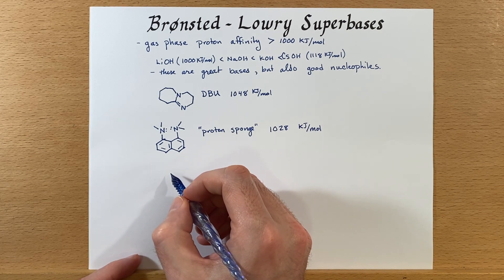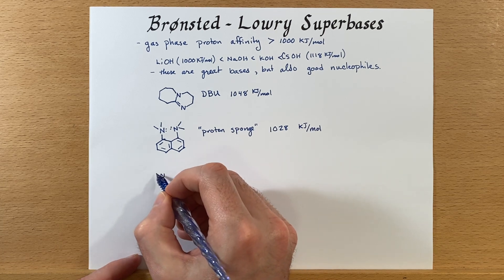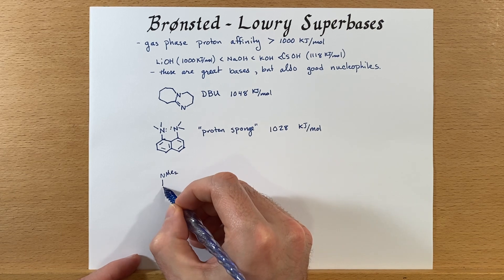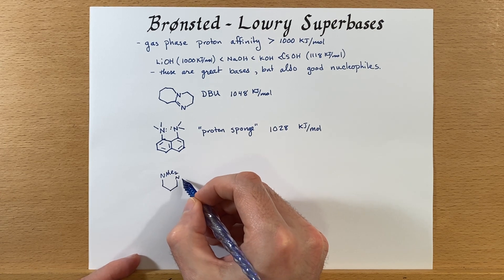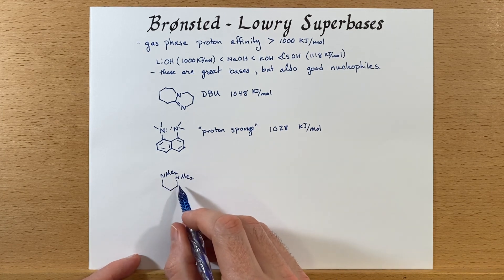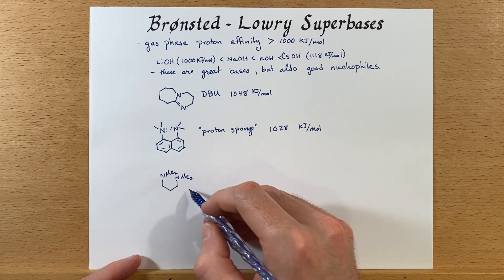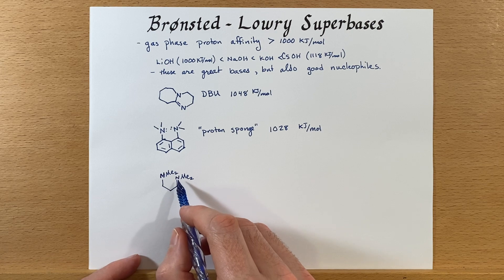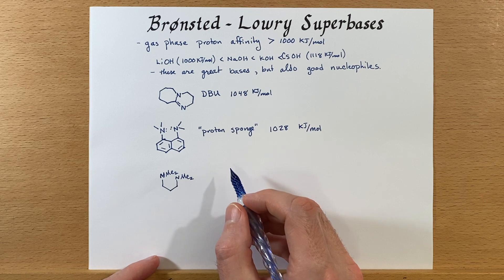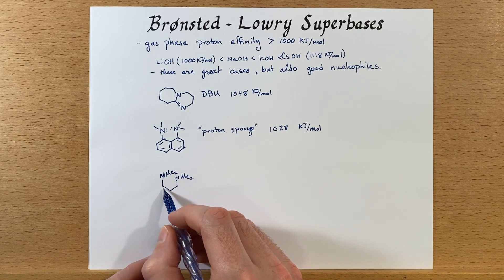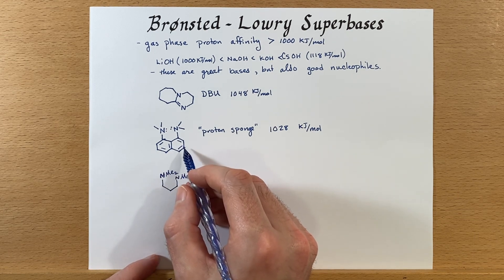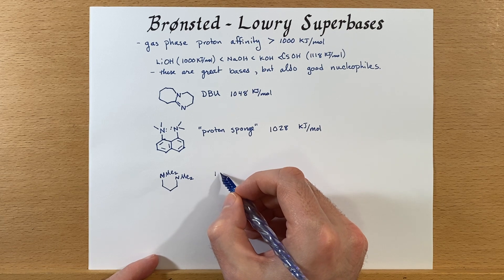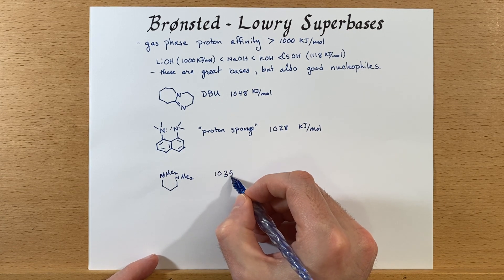Next, we can look at 1,3-bis(dimethylamino)propane, which is similar to our proton sponge with a very similar structure. Drawing it in this configuration — though it's flexible and probably will spread itself out — this one is not going to benefit from the lone pairs forcing the methyl groups away. But it does benefit from the fact that the aryl group is less donating than the alkyl group. So in this case we get a little bit stronger basicity at 1,035 kilojoules per mole.